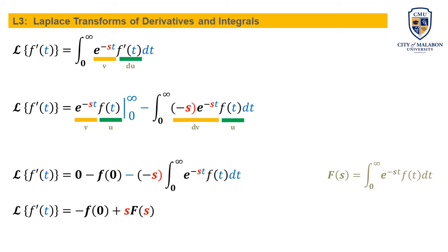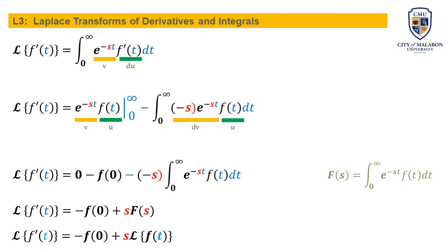Therefore, the Laplace transform of the first derivative of f of t equals negative f of zero plus s times F of s. Rewriting in Laplace transform notation: the Laplace transform of f prime of t is equal to s F of s minus f of zero. That is the formula for the first derivative.